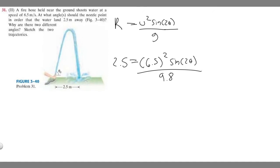So we want to solve for theta, which is our angle. Multiply both sides by 9.8. 9.8 times 2.5 is 24.5. And so that equals 6.5 squared times the sine of 2 theta.